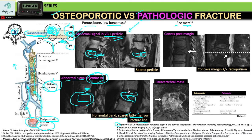Next, we also have a sign of the convex posterior margin, which is a sign of pathologic fracture. It also makes sense because when you have red marrow in the vertebral body and you have a lot of neoplastic cells there, you're going to have bony expansion.